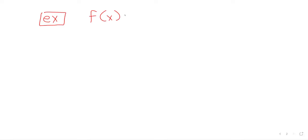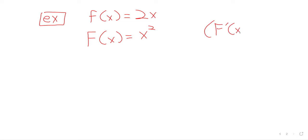For example, if lowercase f(x) were 2x, then uppercase F(x) could be x². Because the derivative of x² is 2x. And I said 'an' antiderivative of 2x could be x², because antiderivatives aren't unique. x² plus 3, for example, is also an antiderivative.